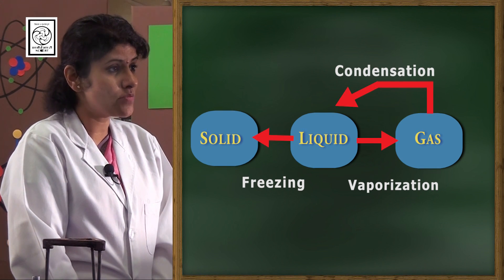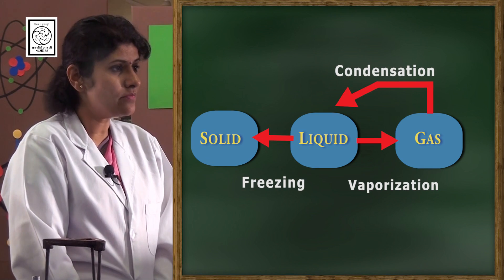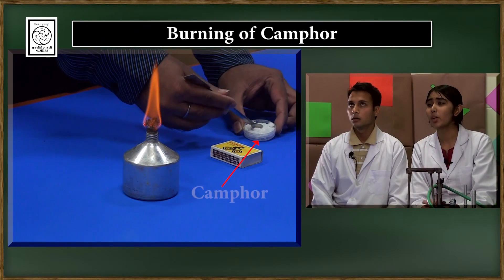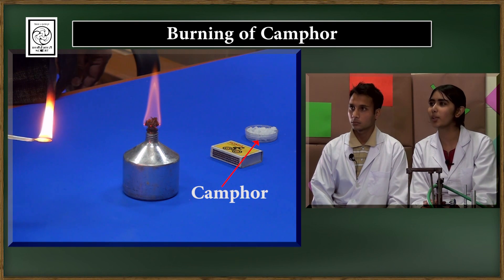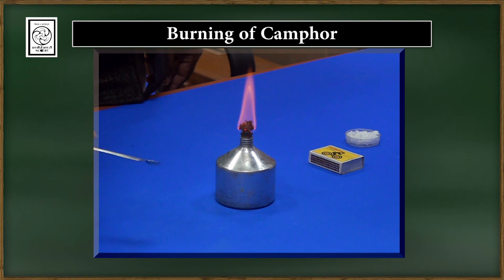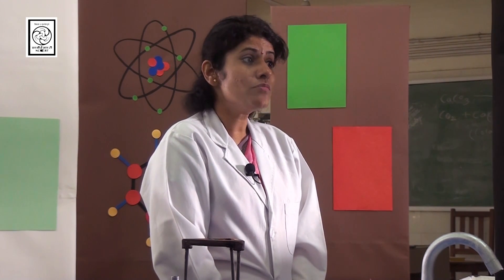Now, have you ever observed the burning of camphor? Yes, ma'am. What have you observed? Ma'am, on burning, camphor changes directly from solid to gaseous state without undergoing liquid state. Right. These are the substances which are sublime in nature. In the process of sublimation, certain substances convert into gaseous state directly from solid state without undergoing liquid state.